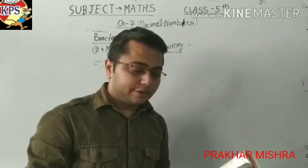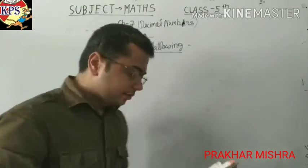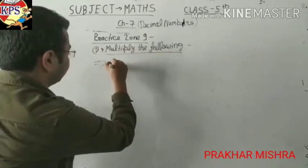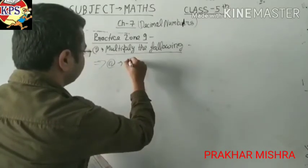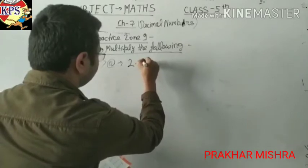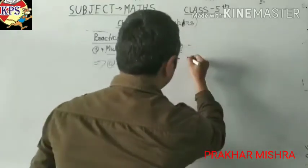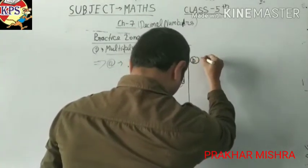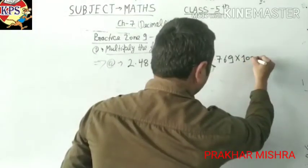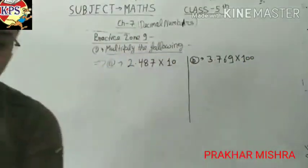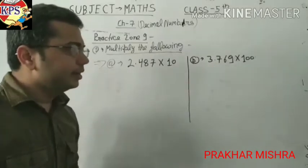The question is: multiply the following decimal numbers. The first number given is 2.487 into 10. Two numbers are given: first is 2.487 and second is 3.769 into 100.